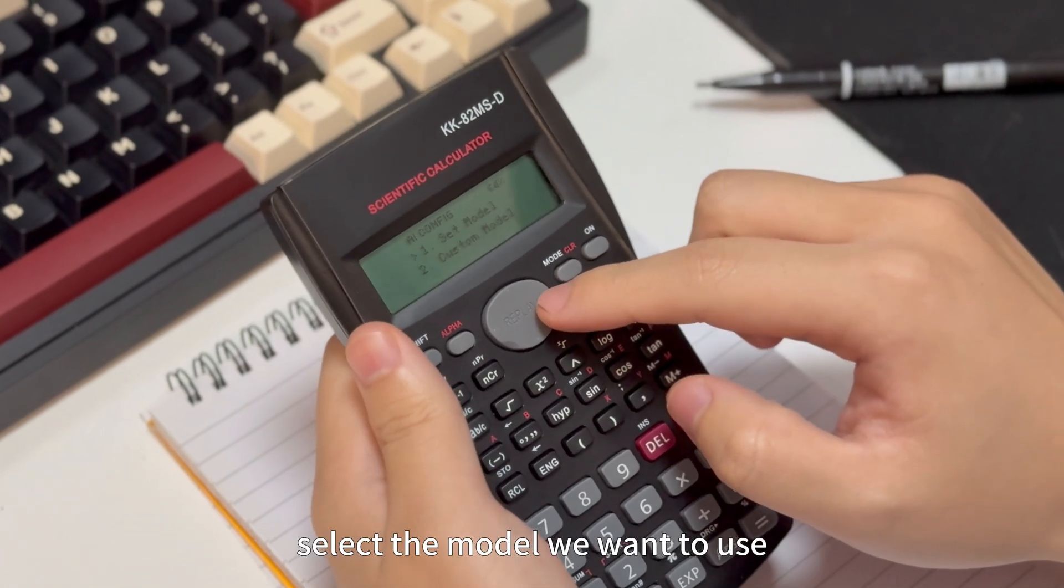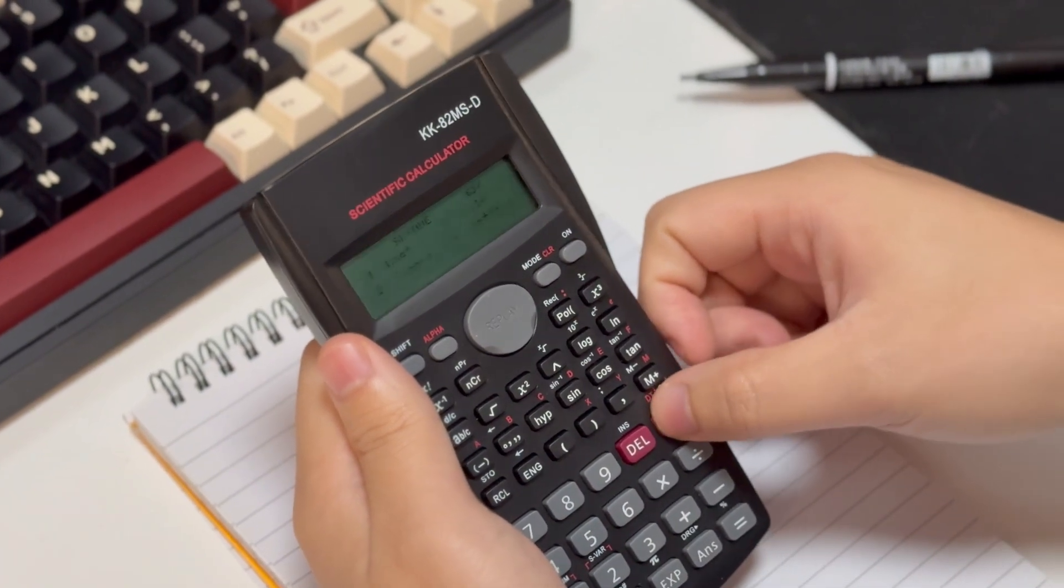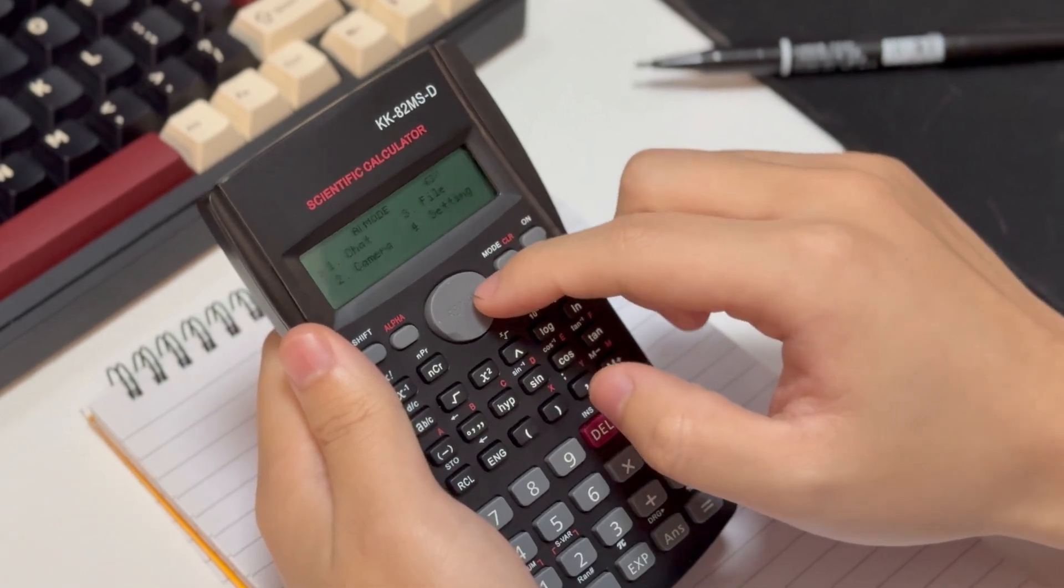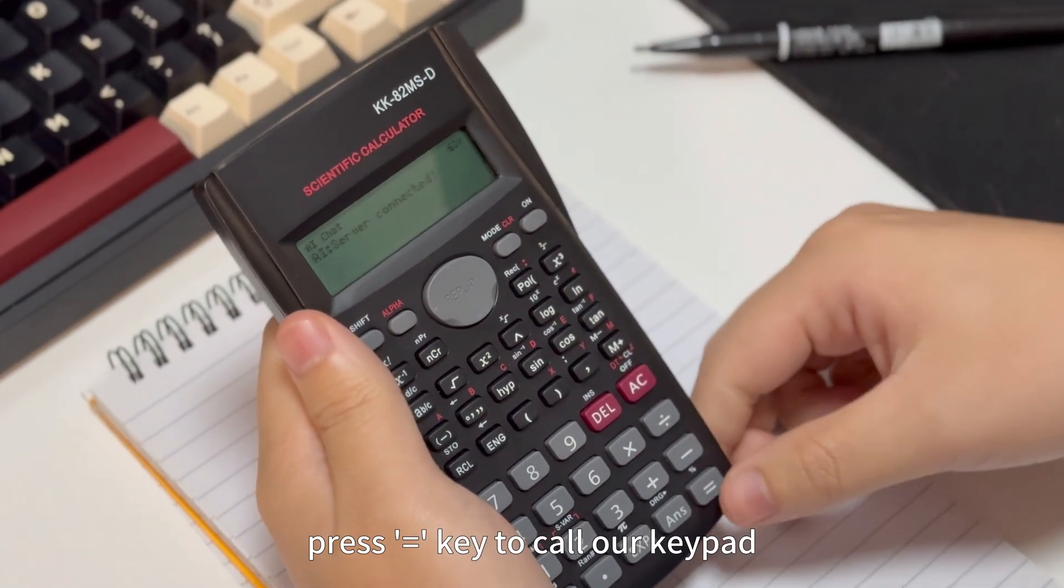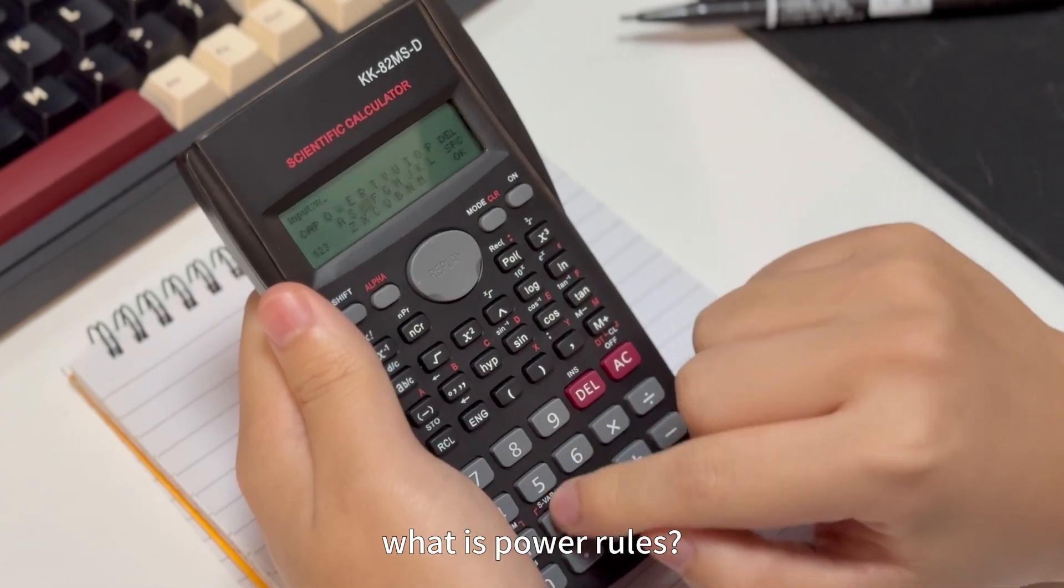Select the model we want to use. Now let's use the chat mode. Press equal key to call our keypad. Let's ask AI a simple question. What is power rules?